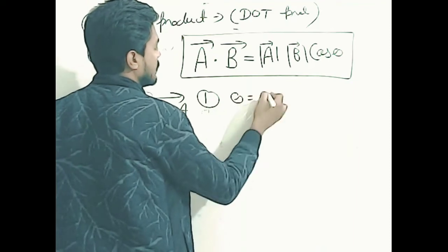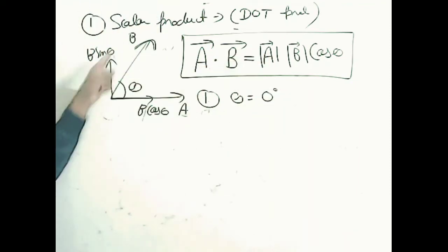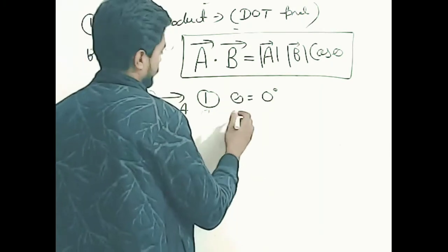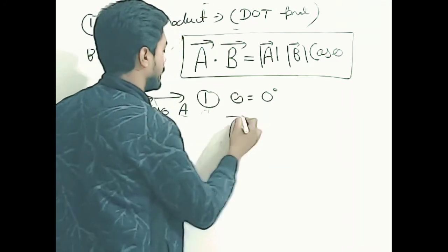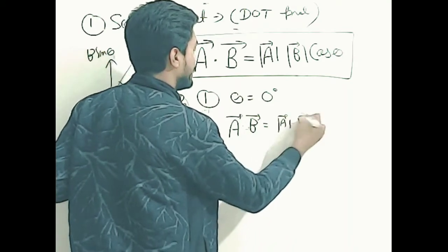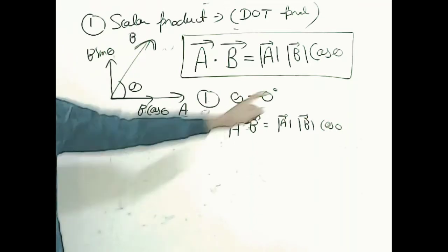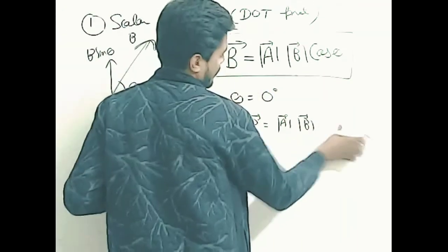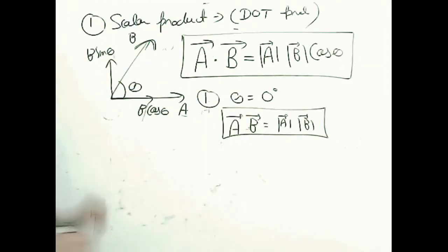Now we discuss some cases. Case 1: when theta equals zero degrees — that is, the two vectors are parallel. Then A dot B equals |A| |B| cos 0. Since cos 0 equals 1, the result is simply |A| times |B|.